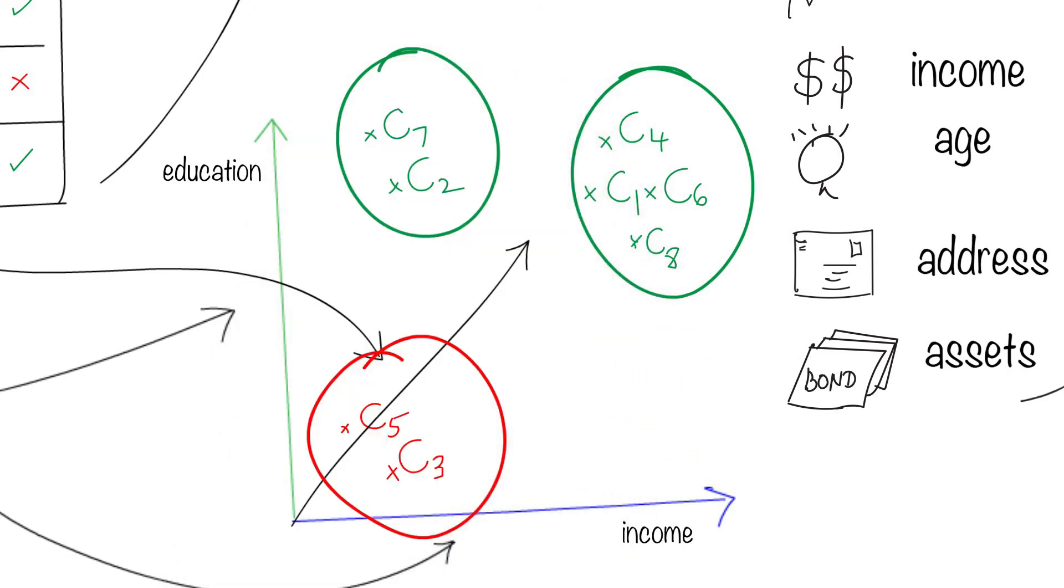Here's one example of what that might look like. The green marks customers who have paid back the loan and the red marks customers who have not. If this is the underlying pattern, then the machine will reject loans for people who have low income and a low education.